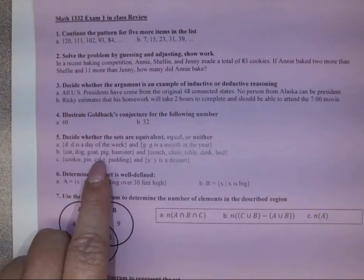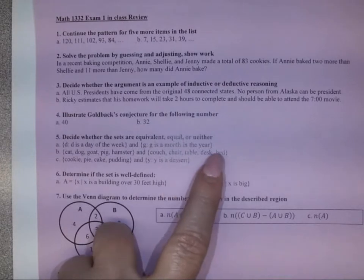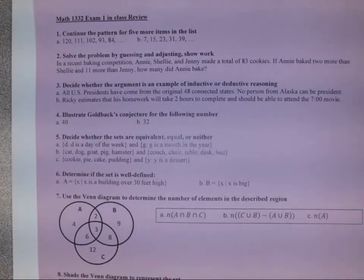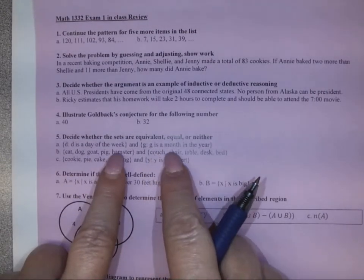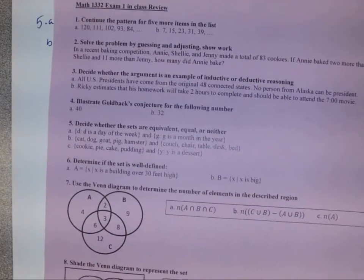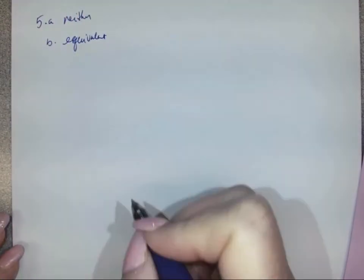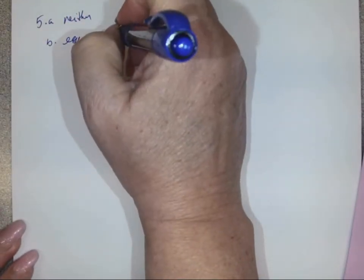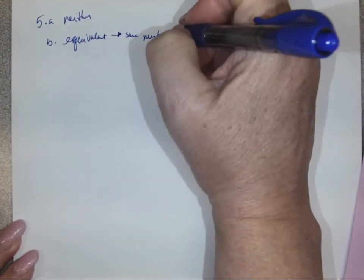For Part B, we have a set with cat, dog, goat, pig, and hamster, and another with couch, chair, table, desk, and bed. They're not equal because the elements are different. However, both sets have 5 elements each, which makes them equivalent. They are equivalent because they have the same number of elements in each set.